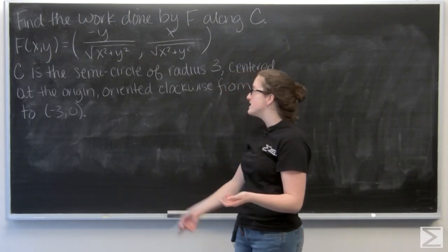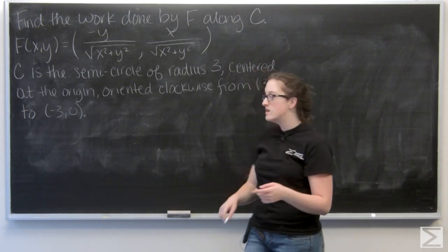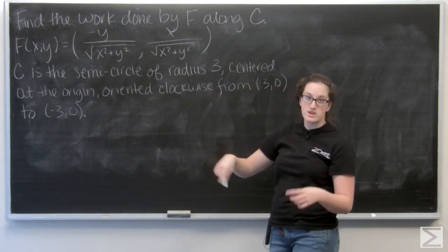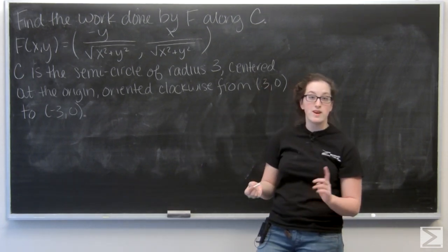Alright, so for this problem, I'm asked to find the work done by F along the curve C. And C is the semicircle of radius 3, centered at the origin, oriented counterclockwise from (3,0) to (-3,0).